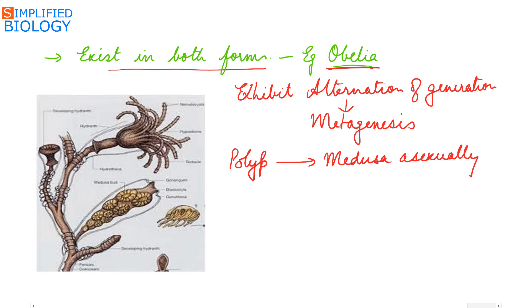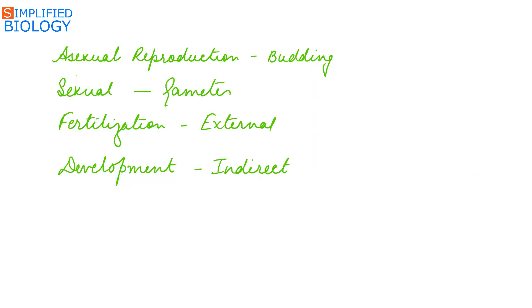This is a polyp and these are the medusas produced by the polyp. So the polyp produces medusa asexually. Asexual reproduction takes place by budding.